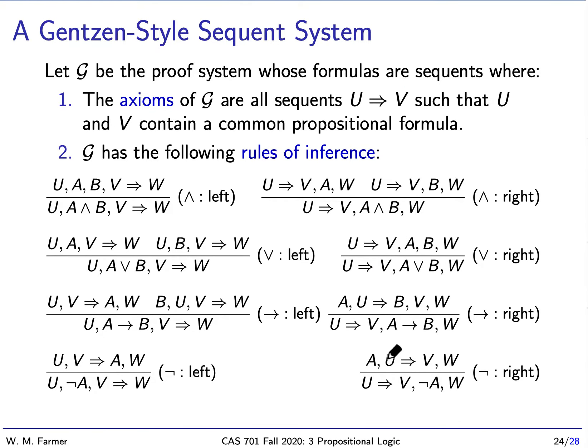I'm going to define here a Gentzen-style sequent system. The axioms are going to be all sequents u arrow v where there's going to have to be a common propositional formula in both. So if u and v both contain a common propositional formula a, a can even be very complex, we will say that as an axiom.